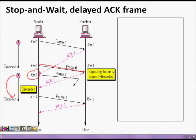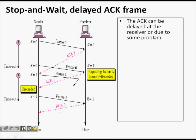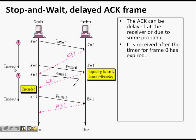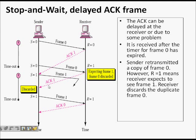The duplicate ACK 1 is discarded because frame one has already been sent. But because ACK 0 was never received for frame one (since frame one was dropped), the timer for frame one expires and the sender transmits frame one again. The receiver receives frame one and sends ACK 0. The key point: even if an acknowledgement is delayed, retransmission can happen correctly.